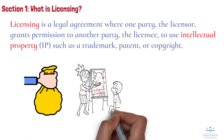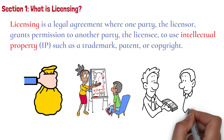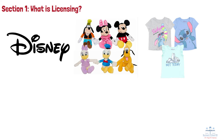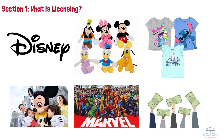Licensing allows businesses to expand their reach without the need for direct investment in product development or market entry. For example, one of the most well-known examples of licensing is Disney, which licenses its characters to various companies that produce toys, clothing, and other merchandise featuring characters like Mickey Mouse and Marvel superheroes. Disney, as the licensor, receives royalties, while the licensees benefit by using Disney's valuable intellectual property to grow their product lines.